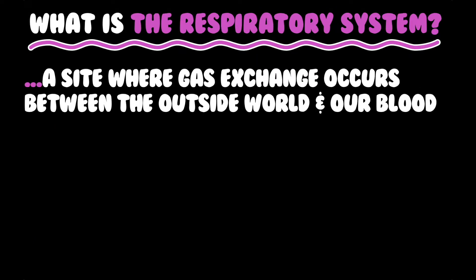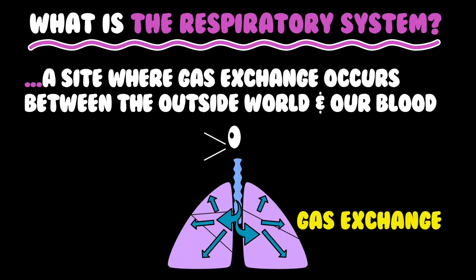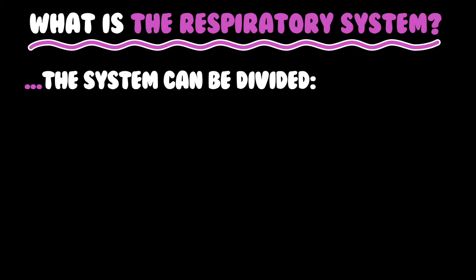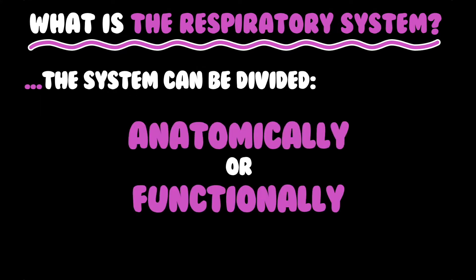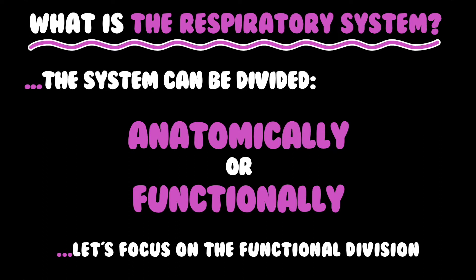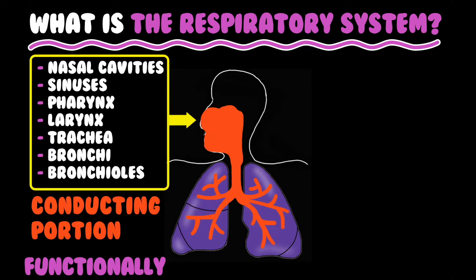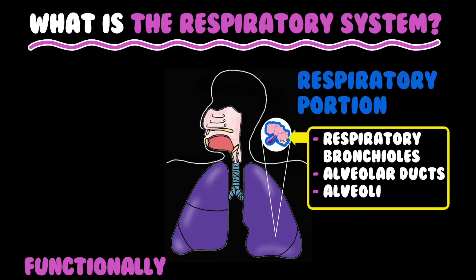What is the respiratory system? It is a site where gas exchange occurs between the outside world and our blood. The system can be divided anatomically or functionally. Functionally, the nasal cavities, sinuses, pharynx, larynx, trachea, bronchi, and bronchioles constitute the conducting portion, whereas the respiratory portion is constituted by the respiratory bronchioles, alveolar ducts, and the alveoli.